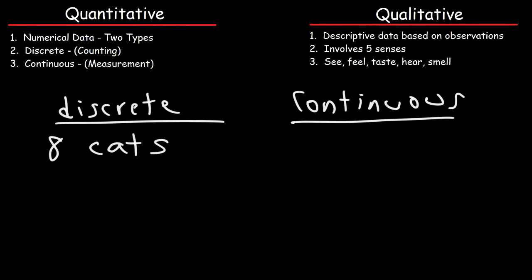Now, something that can be measured is based on a continuous form of numerical data, such as distance. The distance between point A to point B doesn't have to be an integer. It doesn't have to be 5 meters or 8 meters.